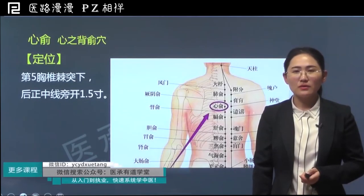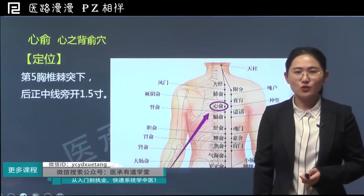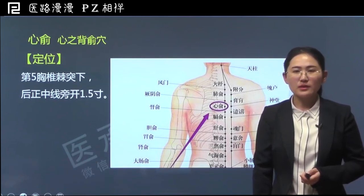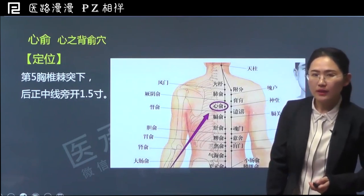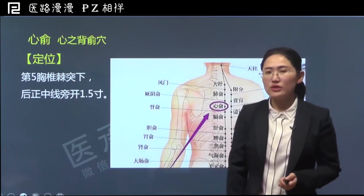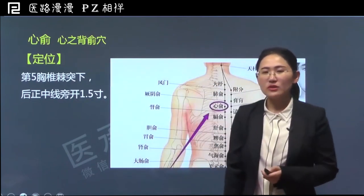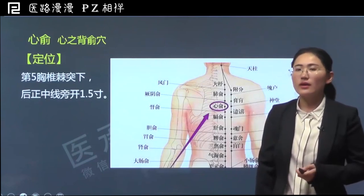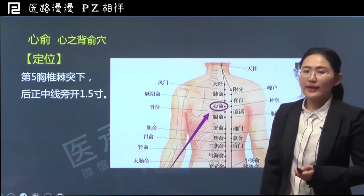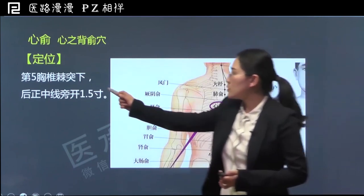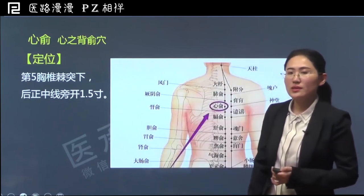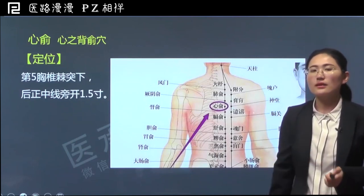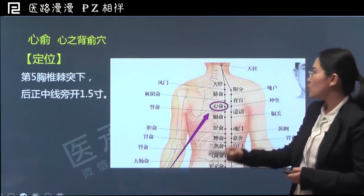大家好，欢迎来到医承有道学堂。这次课咱们继续学习足太阳膀胱经上的背俞穴。之前已经学习了第一个背俞穴——肺俞，那第二个背俞穴就是心俞。心俞是心这一脏之气输注于背部的地方，当然可以治疗心的很多问题。首先来看心俞的定位：它位于第五胸椎棘突下，后正中线旁开1.5寸。注意肺俞是第三胸椎棘突，心俞在其直下隔了一个胸椎，是在第五胸椎棘突下。